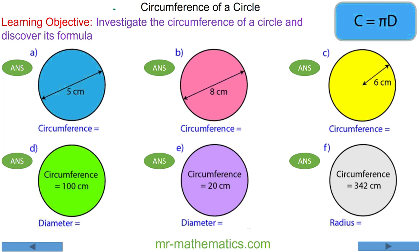Hello, in this lesson we're going to calculate the circumference of a circle using the formula: circumference equals pi times diameter.